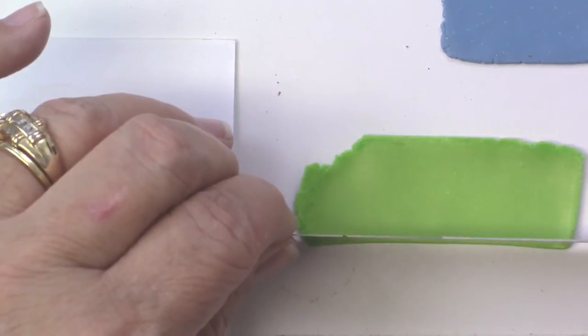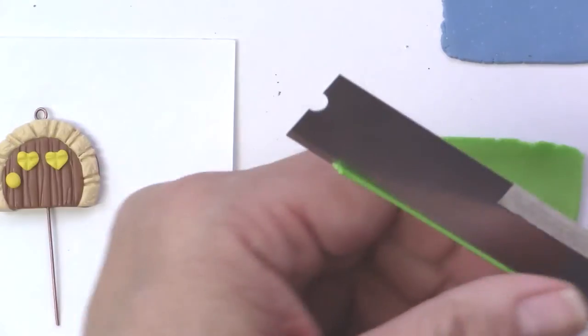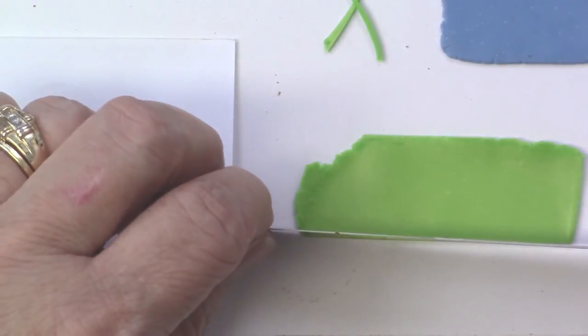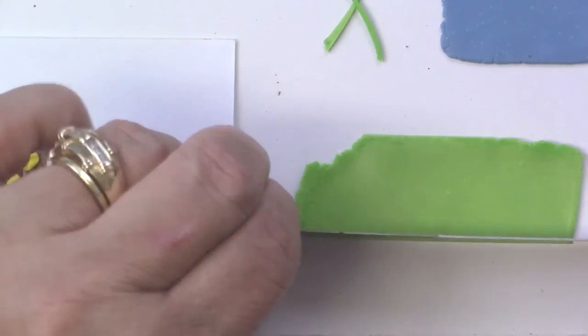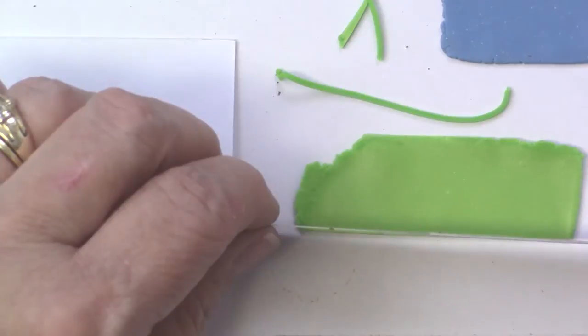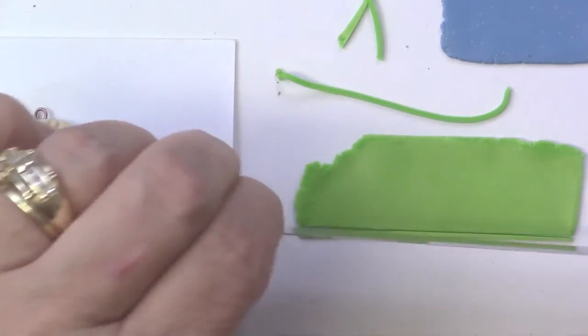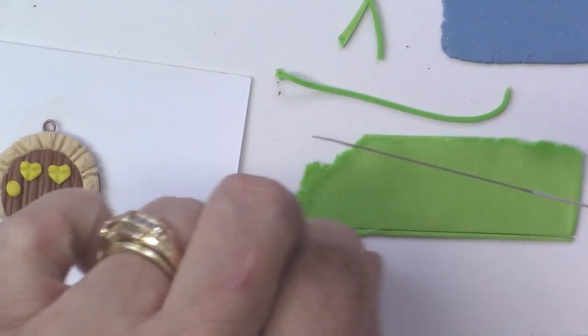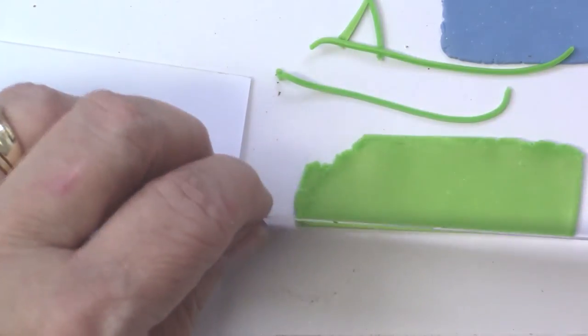I've got my windows and now it's time to place some of the little grasses and vines. I'm taking some of this green clay and cutting very thin strips. I'm not bothering with the extruder this time because it's not enough to make it worthwhile to pull that out.